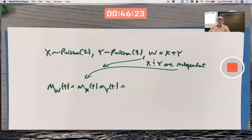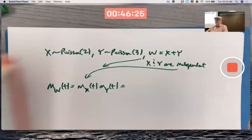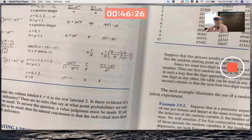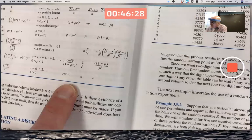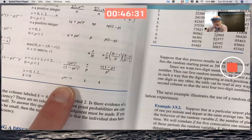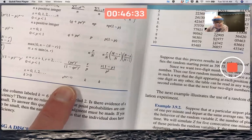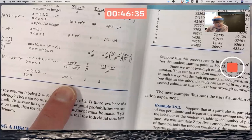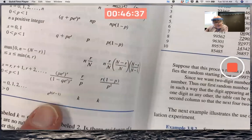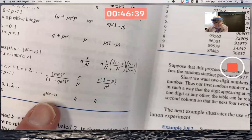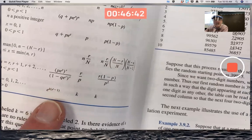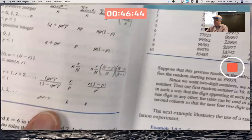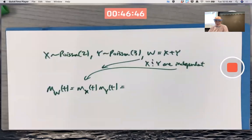Look it up on the table. There's the moment generating function for a Poisson with mean K. Kind of strange. Exponentials within exponentials there. E to the K times E to the T minus 1 falls to the power of E. Exponentials within exponentials. A bit strange, but that's what it is.